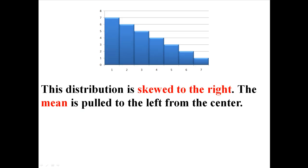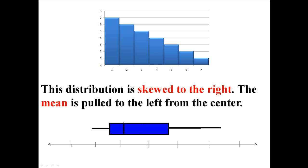This kind of distribution is skewed to the right, so the mean is actually pulled to the left from the center. And that's because this is what a box plot would look like for this kind of data.